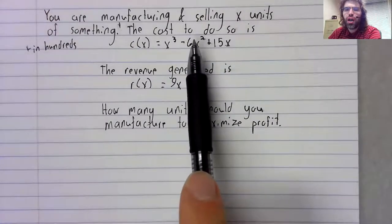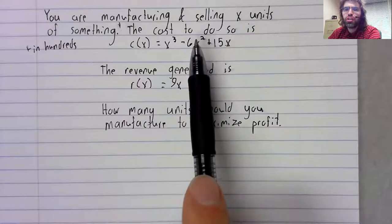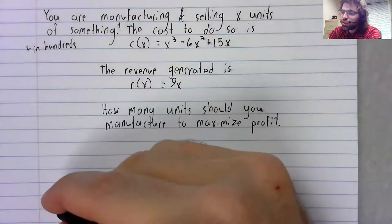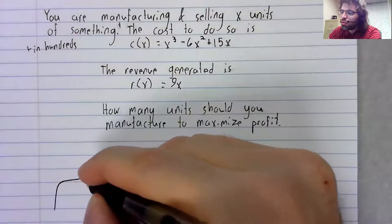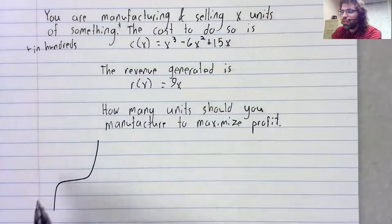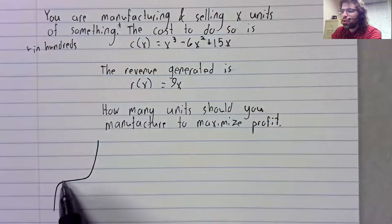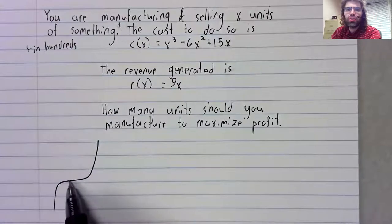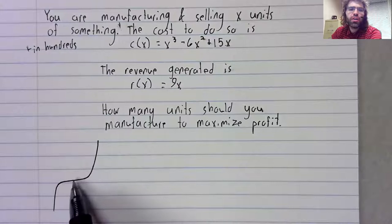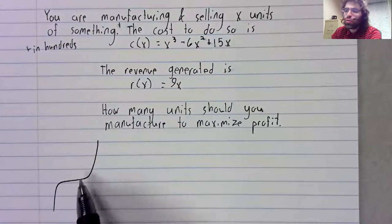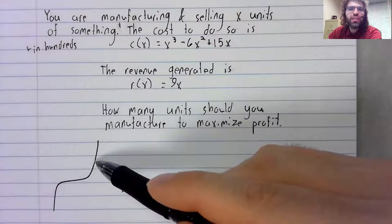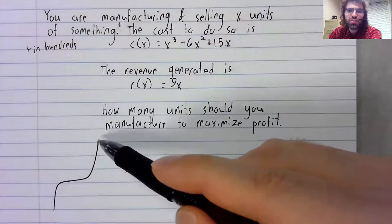Cost functions are frequently cubic. You get cost functions that look like this. And here, where the cost function increases slowly, you're seeing economy of scale. Here, where the cost function increases again, you're seeing diseconomy of scale.